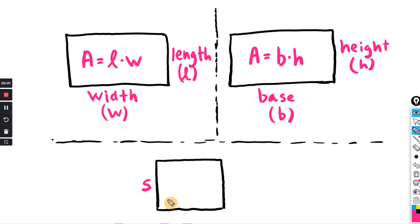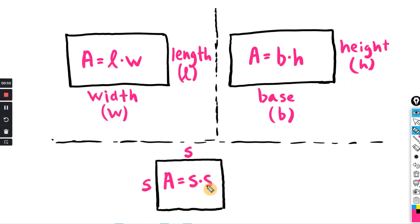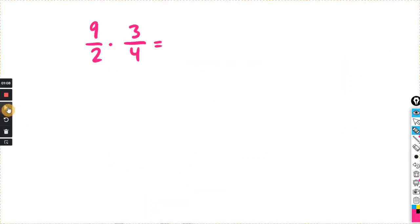For a square it's really the same thing, but all side lengths are equal. The side length is typically represented by the letter S, and the area is side times side. For this exercise we will just stick with side times side for the square.